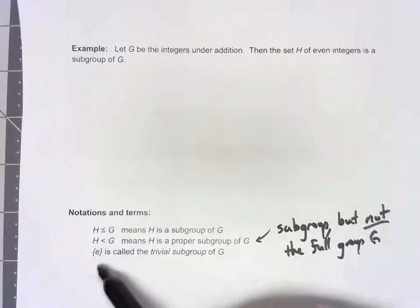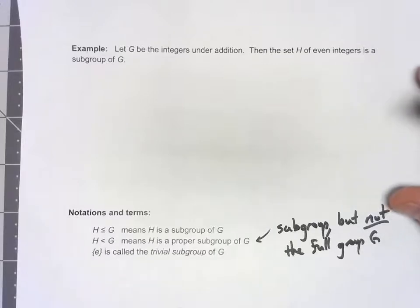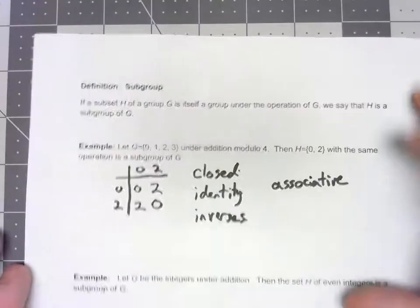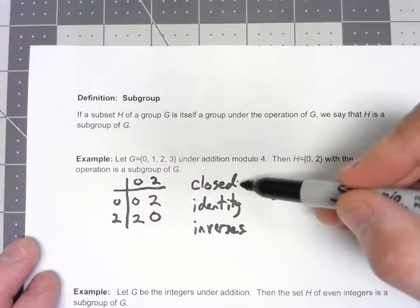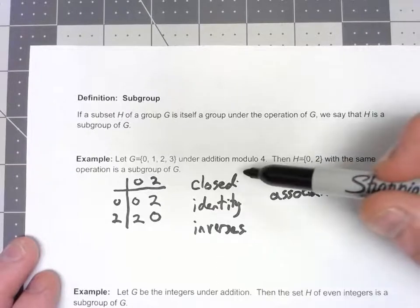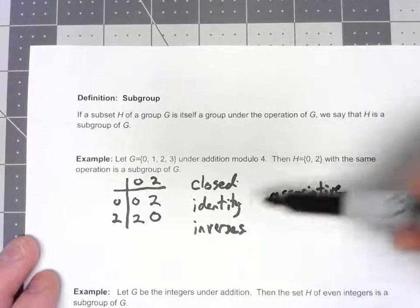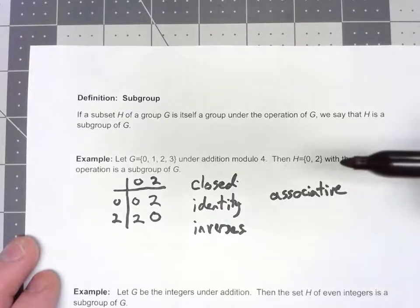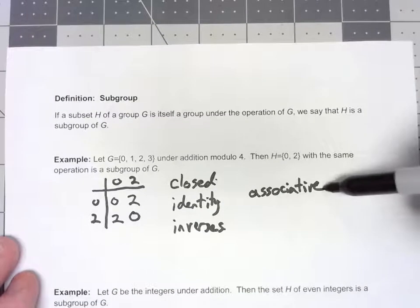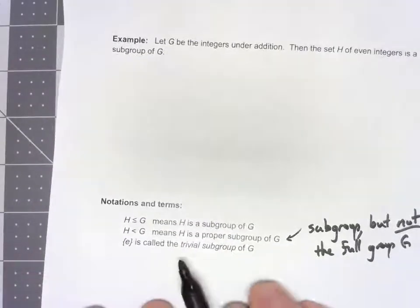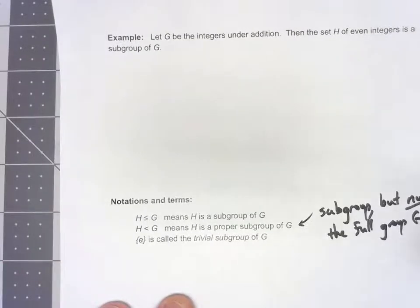Finally, if you just take the identity element, that's always going to be a subgroup as well. Because it's closed, you take the identity times the identity, you get the identity. Kind of by definition it has the identity. The identity is its own inverse. And with only one element in there, it's always going to be associative. So, again, it's a subgroup but it's not a very interesting one. So, we'll call that the trivial subgroup.